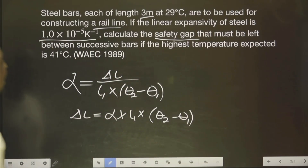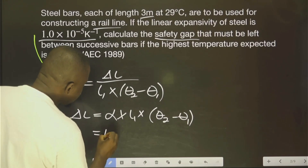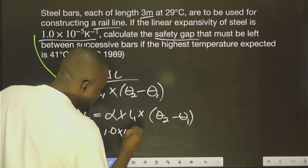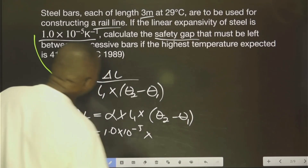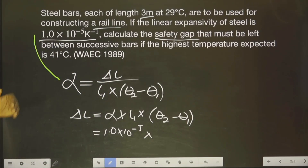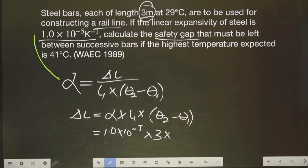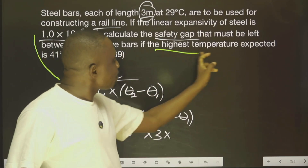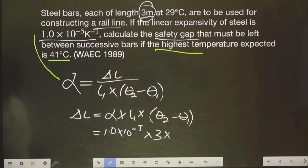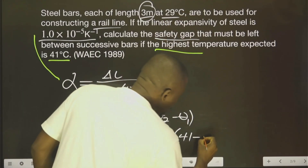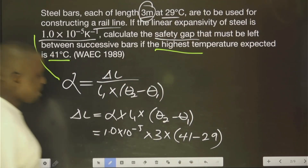Let's substitute. We have linear expansivity as 1.0 × 10⁻⁵, multiplied by the original length of 3 metres. Then, we were told the highest temperature expected is 41, so the change in temperature is 41 minus 29, which is 12.